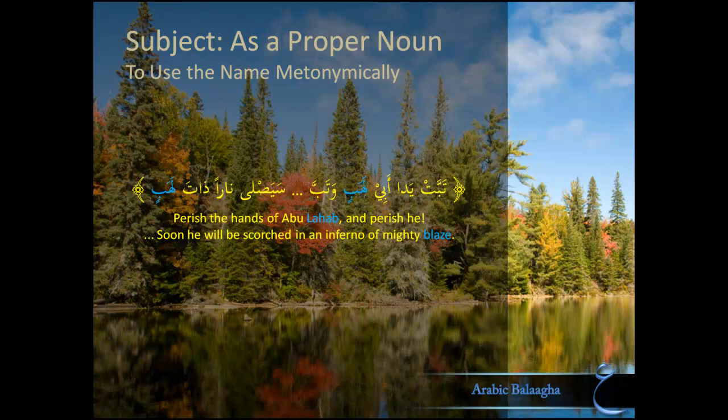The second benefit of using a name is to allude to something the name makes you think of. The previous benefit was based on what the name means, but this benefit is based on what the name is associated with — we call this Kinaya, or metonymy in English. Using the same example of Abu Lahab: when Islam came and the Prophet informed the Sahaba about Jahannam, 'Lahab,' meaning flame, became associated with the fire of Jahannam. So Abu Lahab now metonymically refers to being a Kafir and being destined for Jahannam — whenever somebody says Abu Lahab, what comes to mind is Kufr and Jahannam.